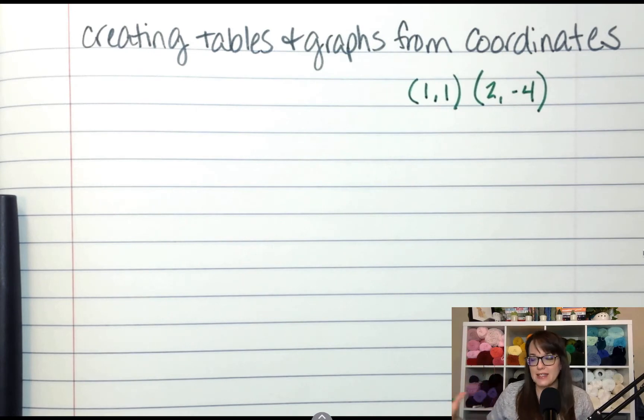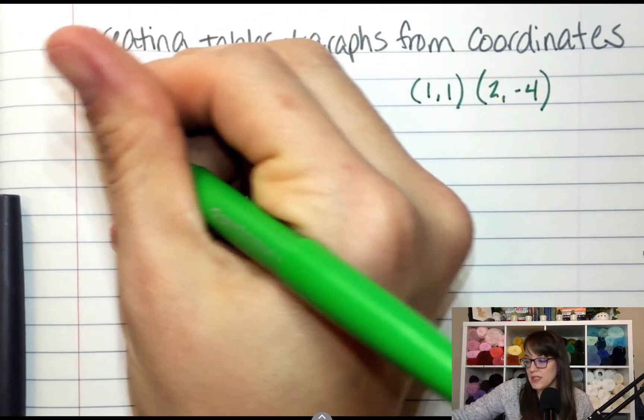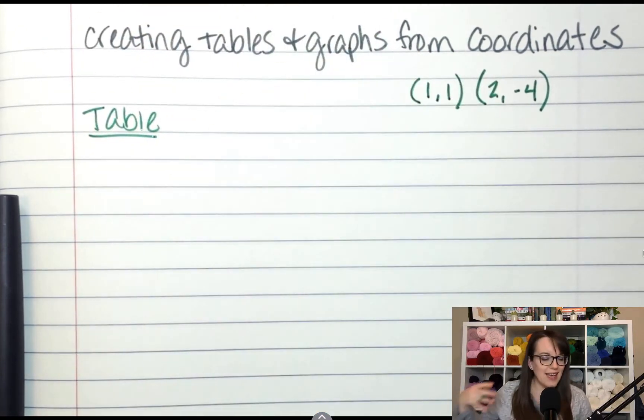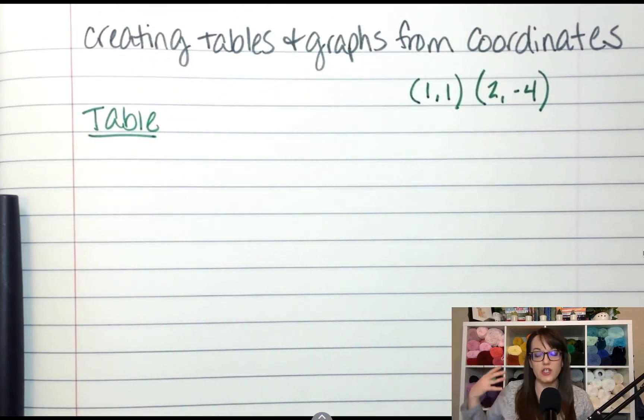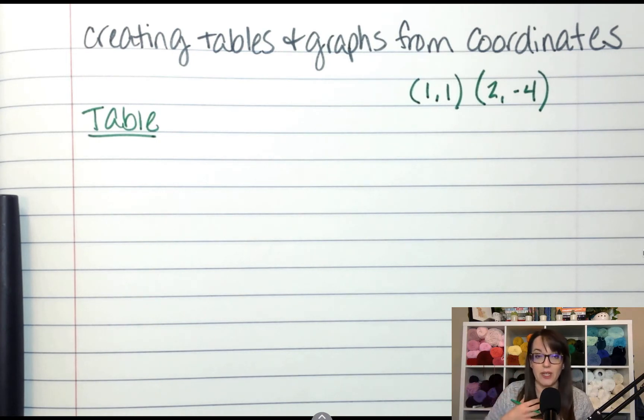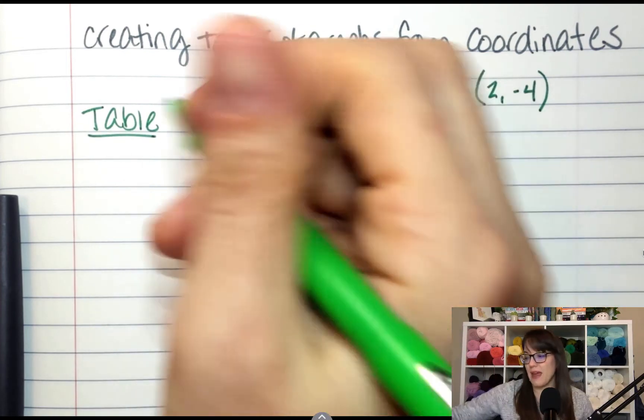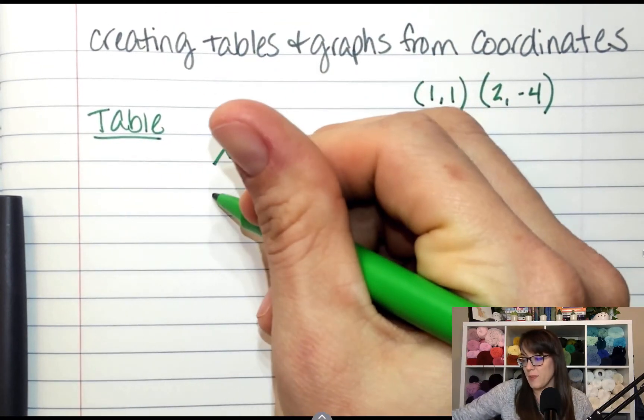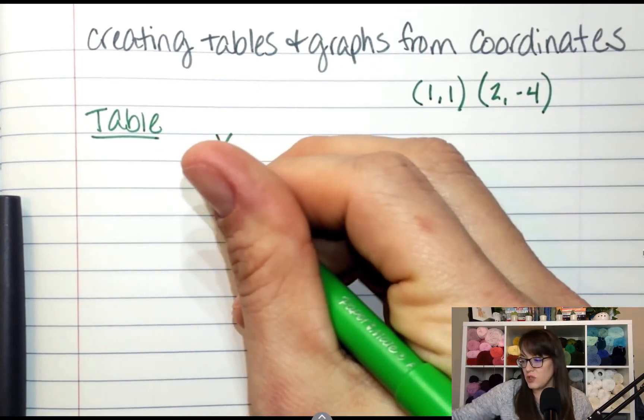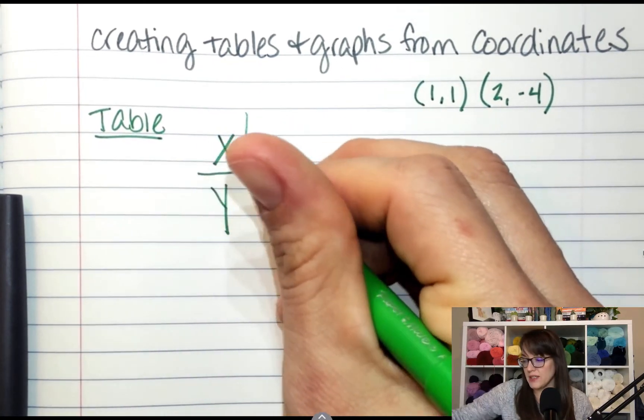Now if we wanted to make these into a table, the idea of this lesson is just to give you tools to choose what's comfortable for you. If you like looking at tables, if tables make sense to you, then when you see coordinates, make a table. When you see graphs, make a table. If a picture is what works best for you, I love pictures. So I would make graphs. In fact, I still do. Every time I see coordinates, I think graphs. So if I wanted to make a table, your X's go on top and your Y's go on bottom, and you just want to match up your coordinates together.